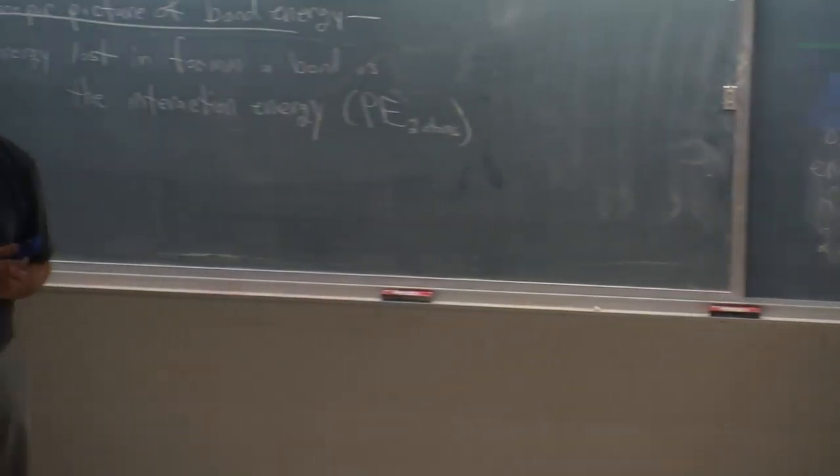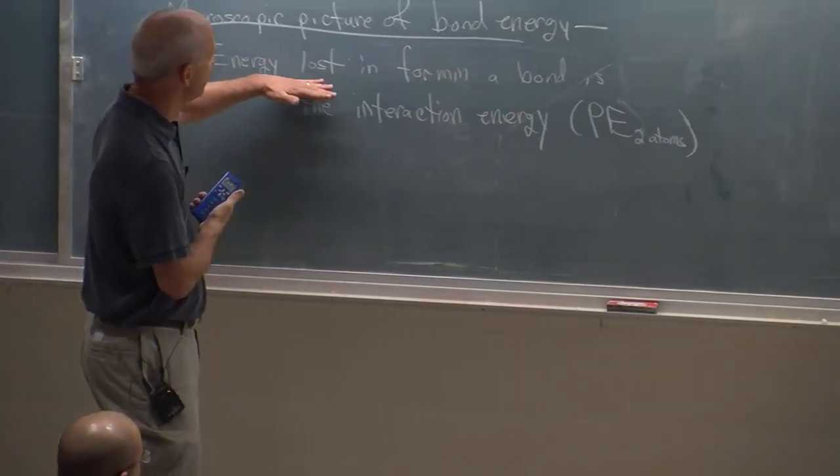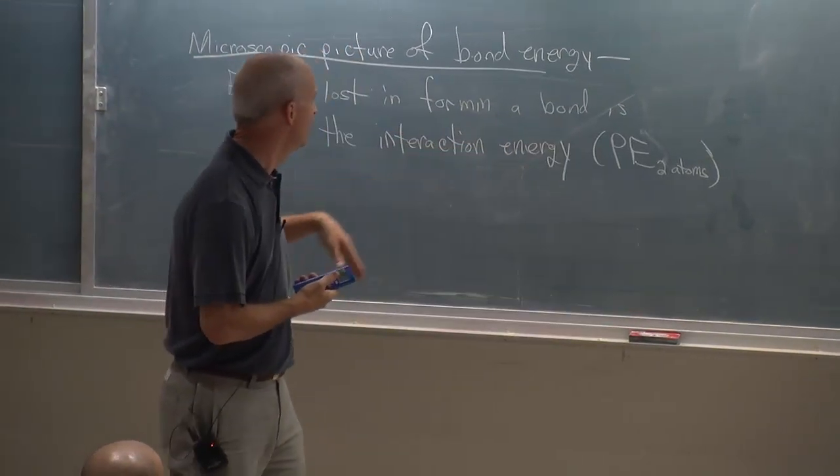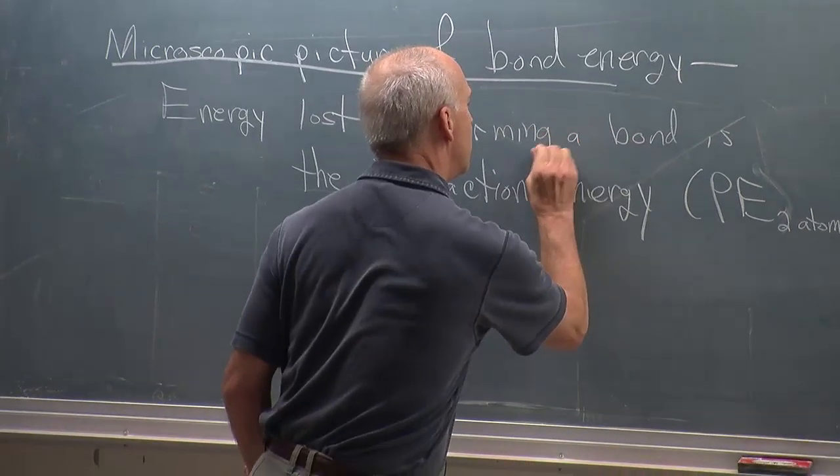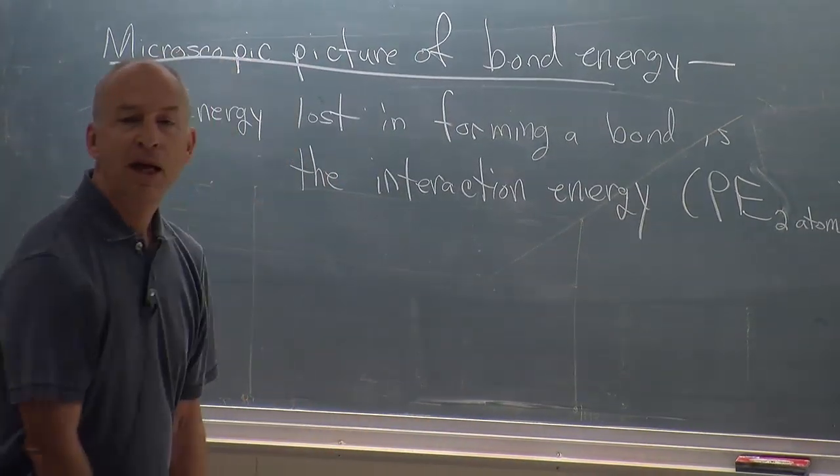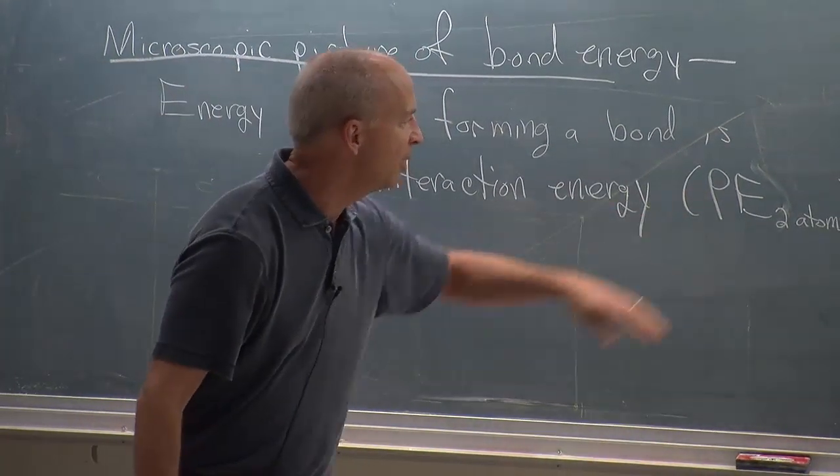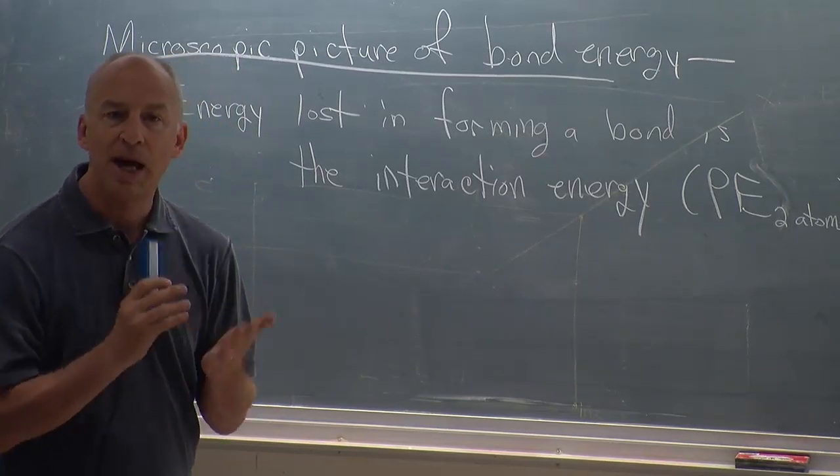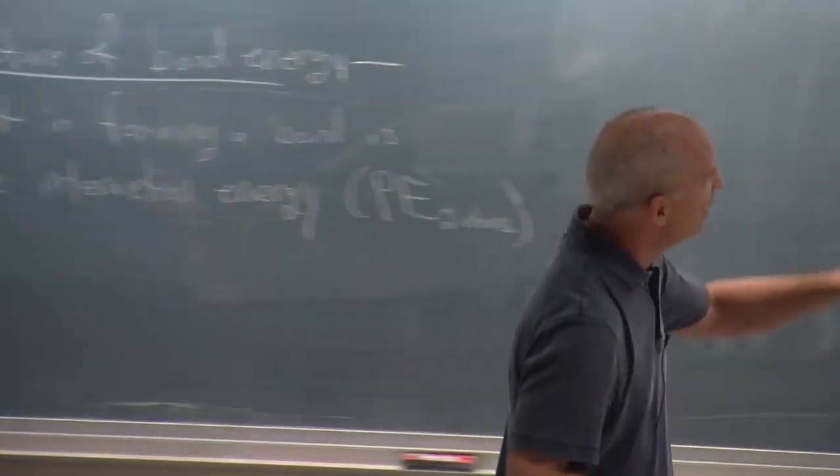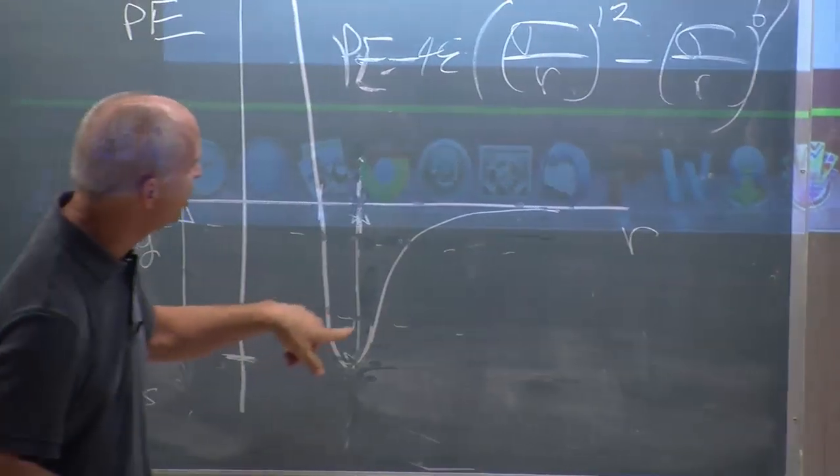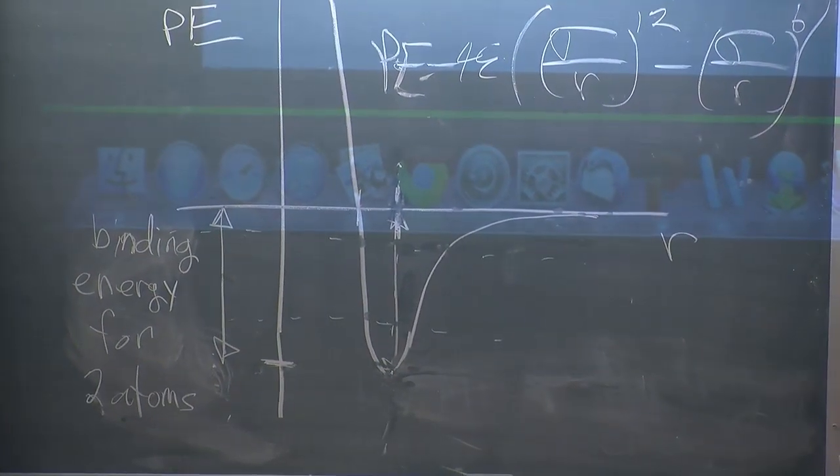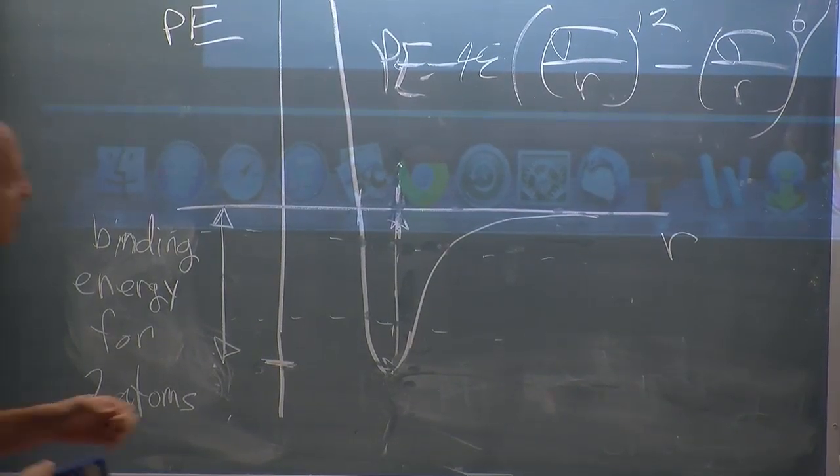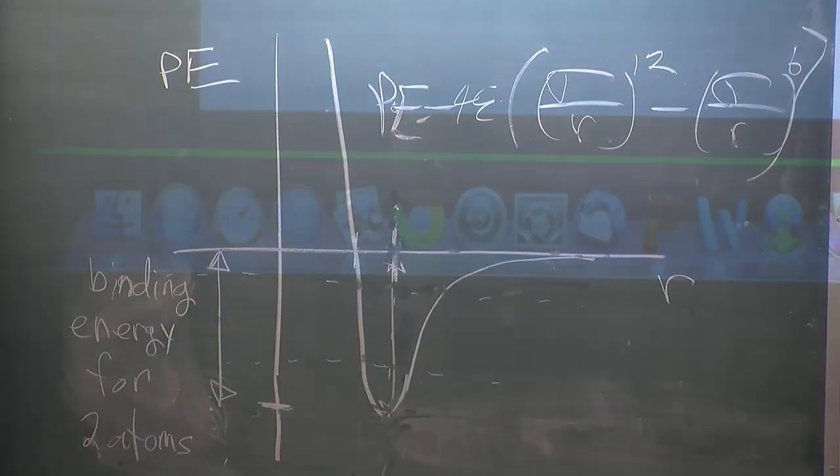So, form a bond. Our picture is, you form a bond and the interaction energy of the two atoms that form a bond has a, the potential energy, the interaction energy has a shape that looks like that as a function of how far apart the atoms are. As a function of this r, the distance between the atoms.